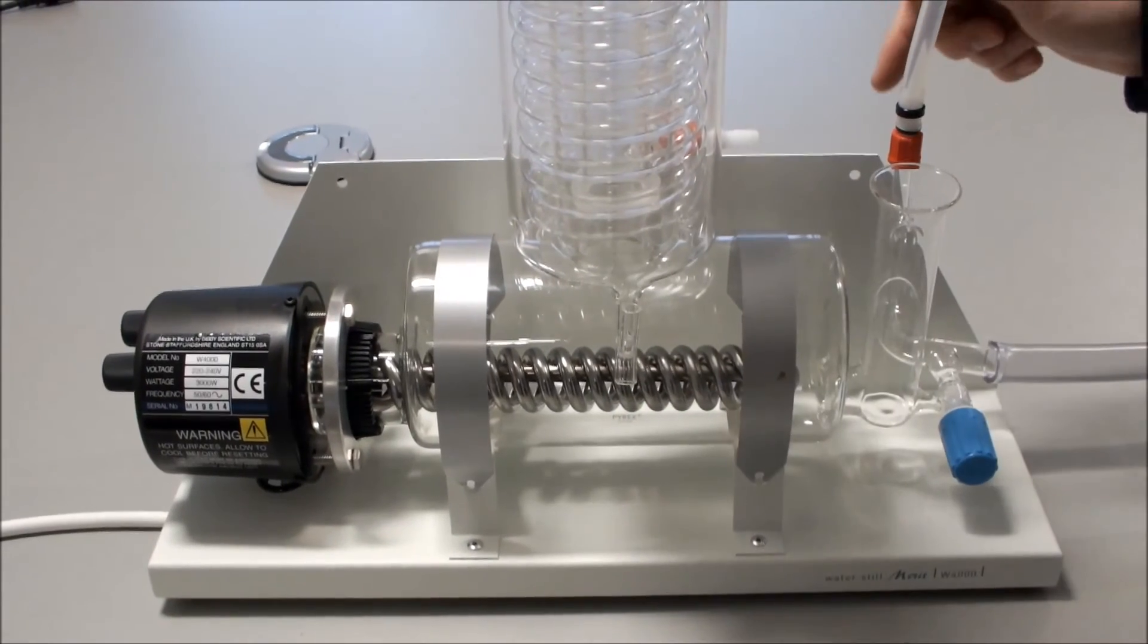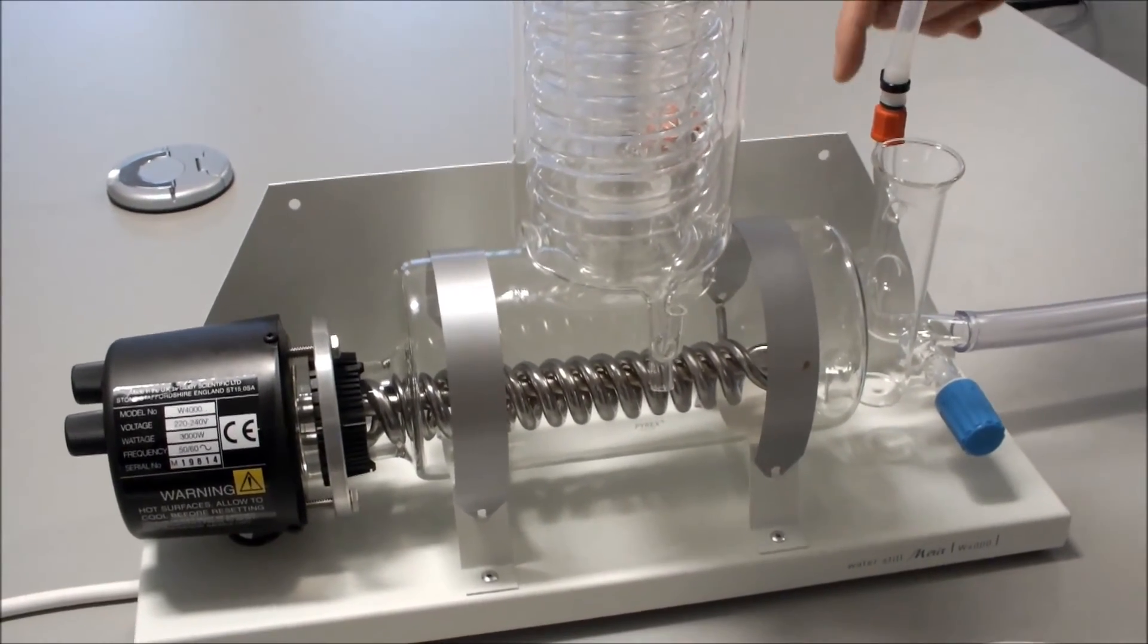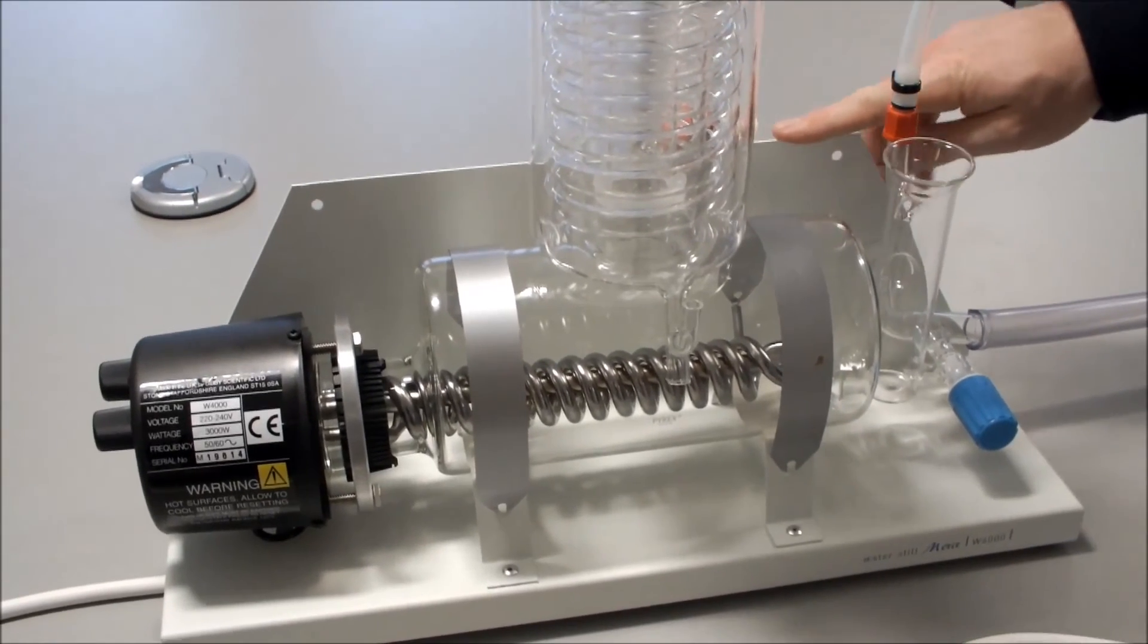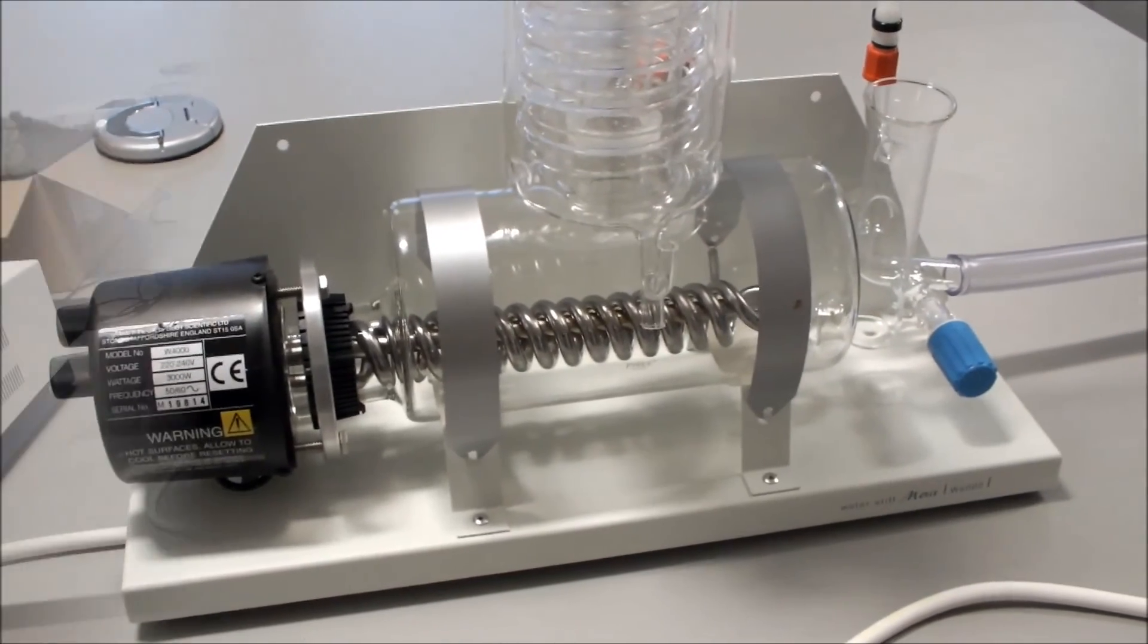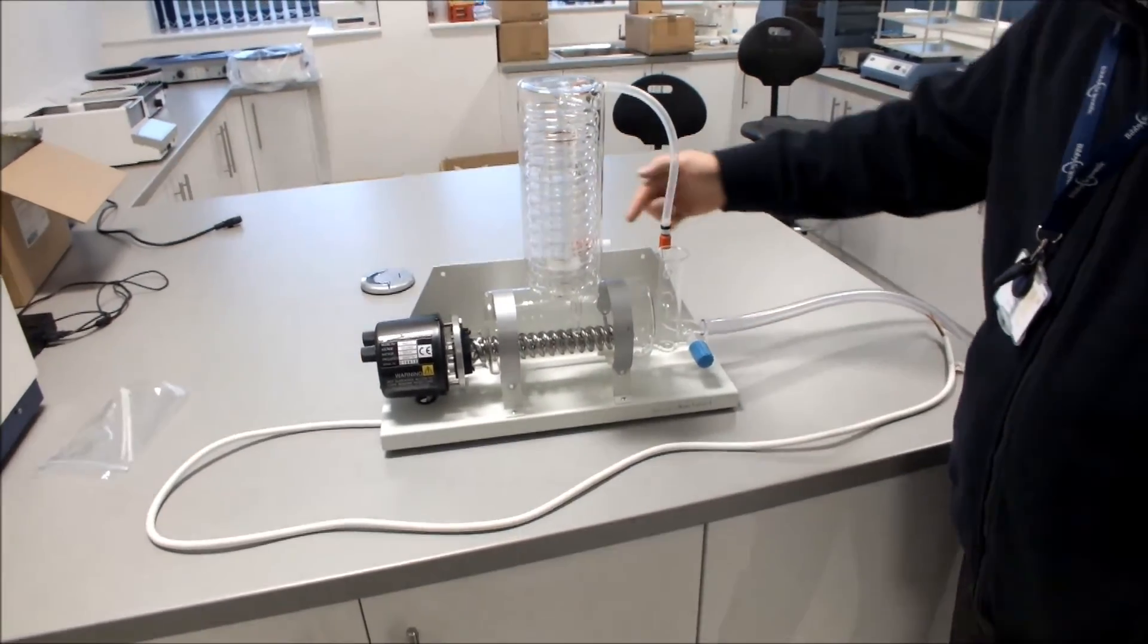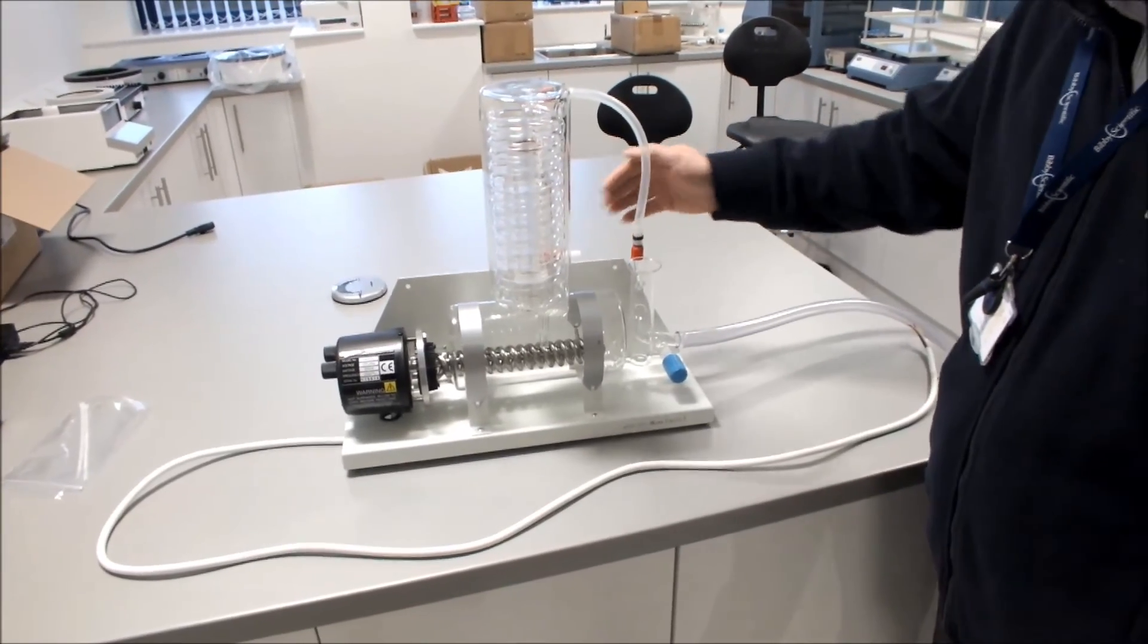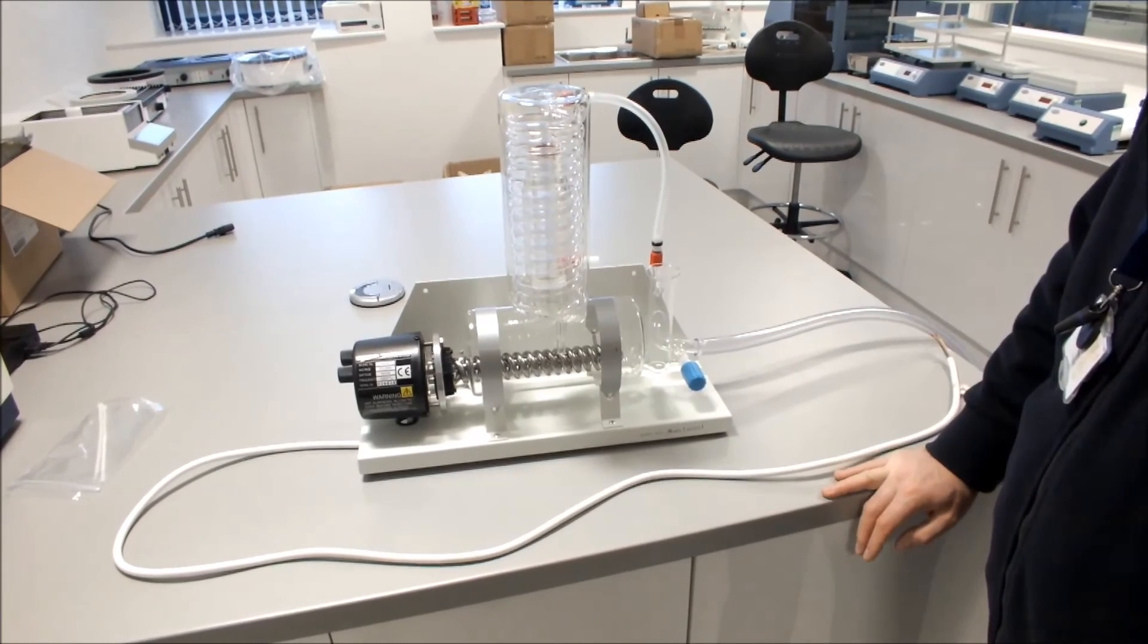Connected your drain, you can then choose the location of your water still. The water still can be wall mounted and there are two wall mounting holes provided. When we have our water still fully complete, connect your cold water supply. Turn the cold water on, let the water run through and you can check for any leaks.